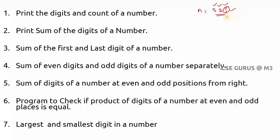How to get the digit in the one's position of any number? When you divide a number by 10, what will be the remainder? For 523 divided by 10, the remainder is 3. Even if you take 28, 28 % 10 gives 8. So when you divide any number by 10, the remainder will be the last digit.